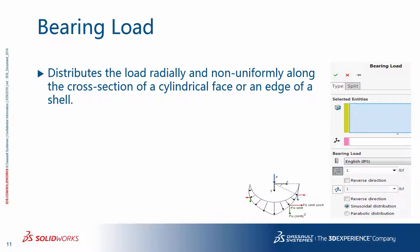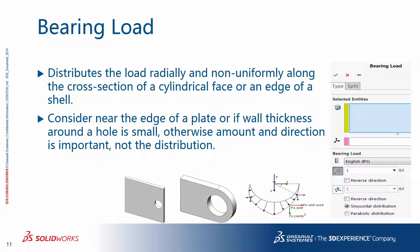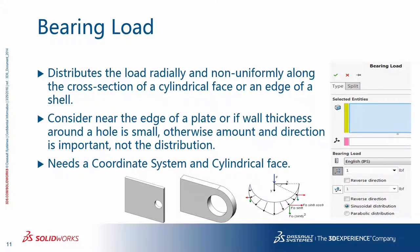Bearing load command distributes the applied load radially and non-uniformly along the cross section of a cylindrical face or an edge of a shell. The load could be due to, for example, a pin or a shaft. You may want to consider bearing loads near the edge of a plate or if wall thickness around the bore is small; otherwise, the amount and direction is important, not really the more precise distribution. The load with a sinusoidal or parabolic distribution is applied to a cylindrical face or a portion of it in a predefined coordinate system.